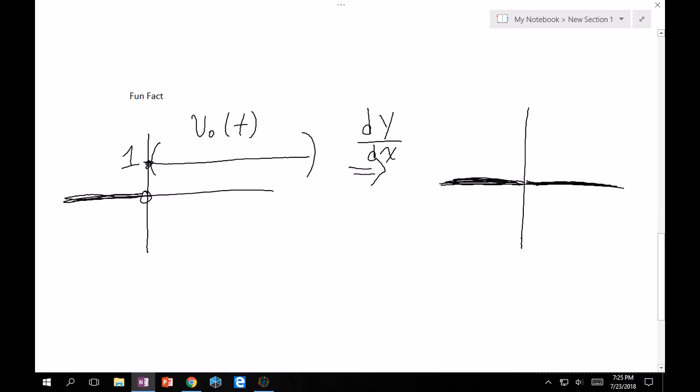But then what happens at 0? There seems to be a jump discontinuity, which would imply basically infinite slope. So we can model it as that little arrow. And so therefore, what is this saying?